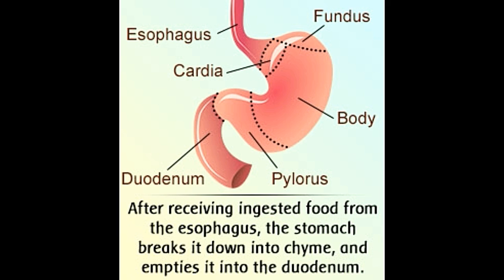Did you know? To provide protection from the highly acidic environment, the epithelial cells that line the stomach produce a new layer of mucus every two weeks.